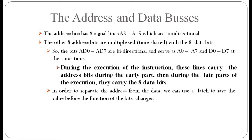The address bus has 8 signal lines A8 to A15 which are unidirectional. The other 8 address bits are multiplexed or time-shared with the 8 data bits. The lines AD0 to AD7 are bi-directional and serve as both A0–A7 and D0–D7. During the early part of instruction execution these lines carry address bits, and during the latter part they carry 8 data bits. A latch can be used to separate the address from the data.